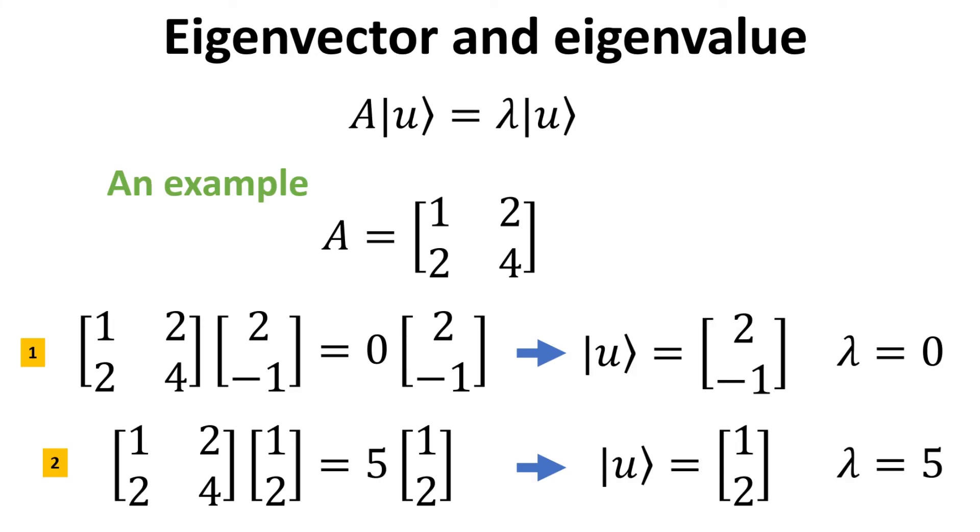Here, let's consider a simple example. Consider a 2 by 2 matrix for A as shown. We expect two sets of eigenvectors and eigenvalues due to the dimensionality of 2.